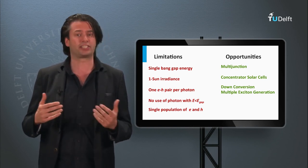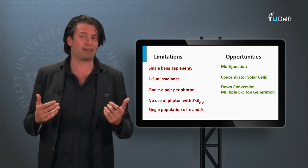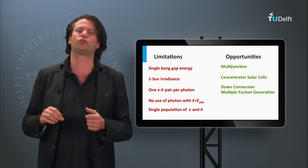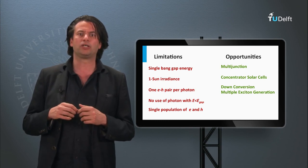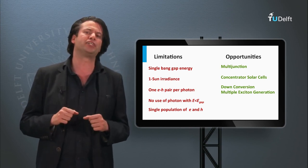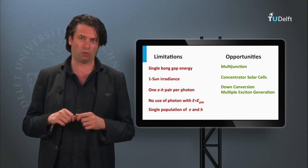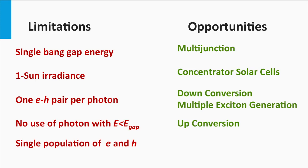The second approach to enhance the charge carrier excitation by a single energetic photon is called multiple-exciton generation. Here, nanostructured semiconductor materials might be able to convert the energy of a photon into two or more excited electron-hole pairs. The problem of the non-use of photons below the bandgap can be tackled with a spectral conversion approach as well. Here, several low-energetic photons which are transmitted through the solar cell are converted into one photon with an energy above that of the bandgap of the semiconductor material. If this photon is reflected back into the material, it can be absorbed.